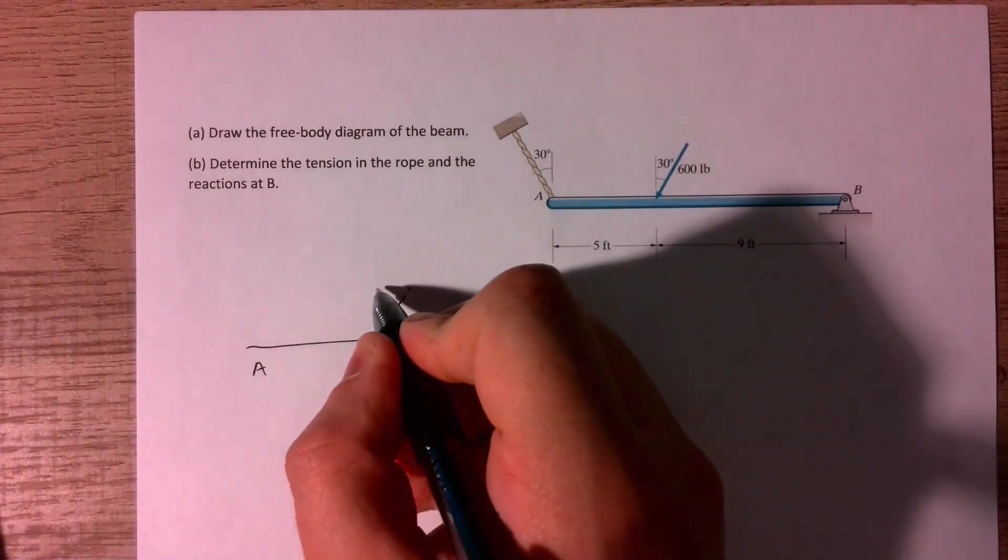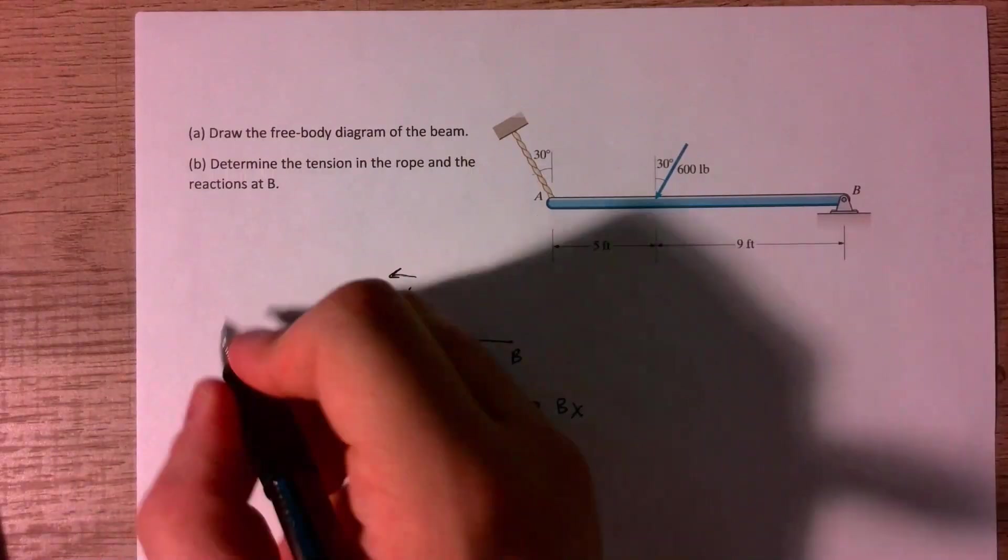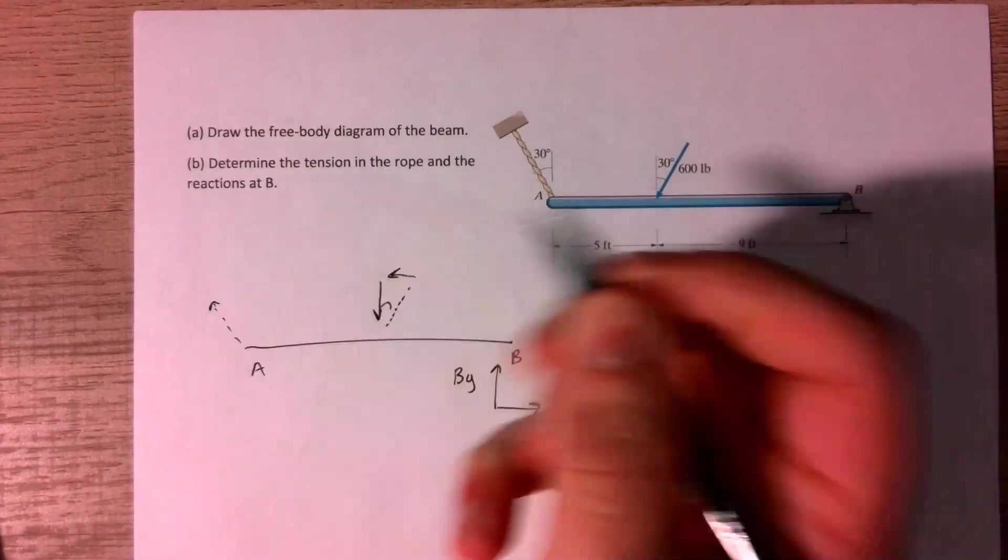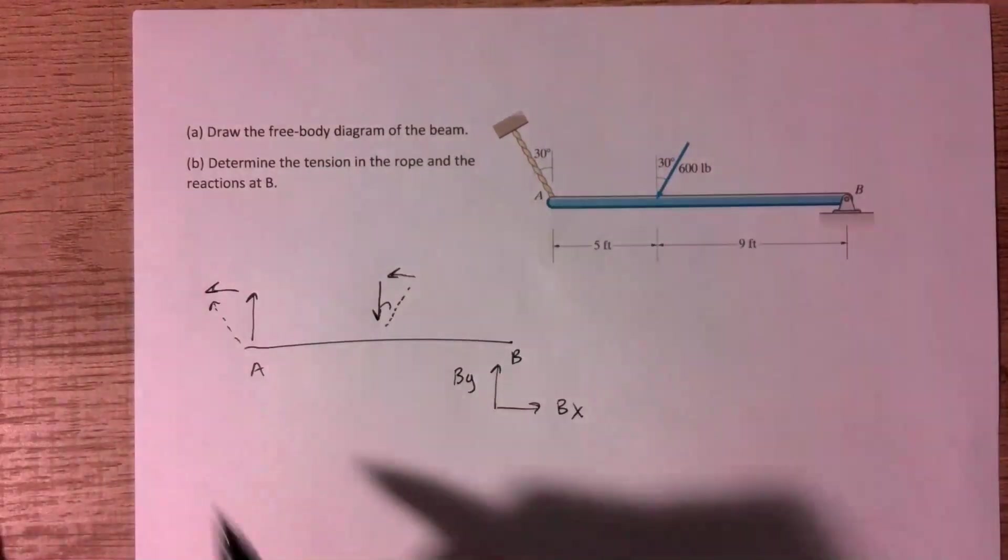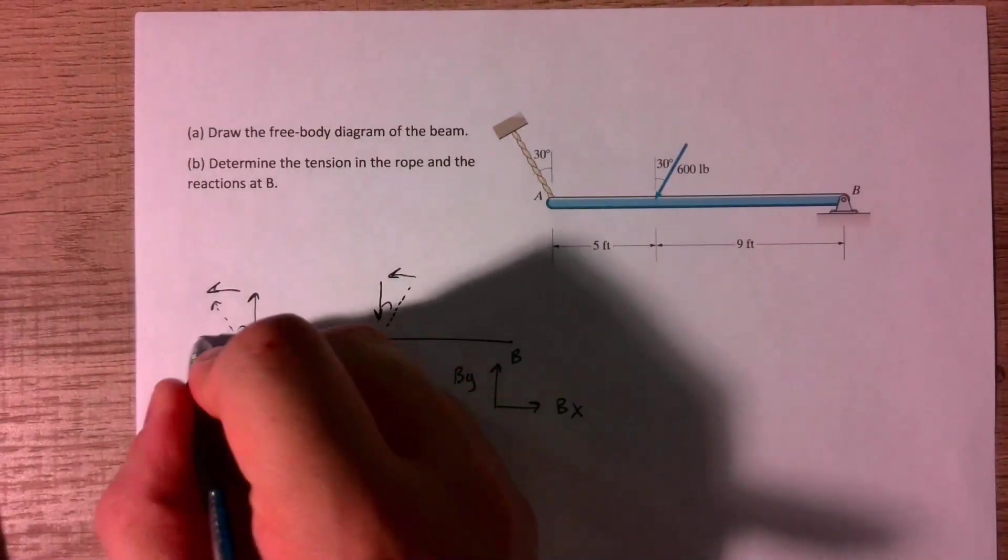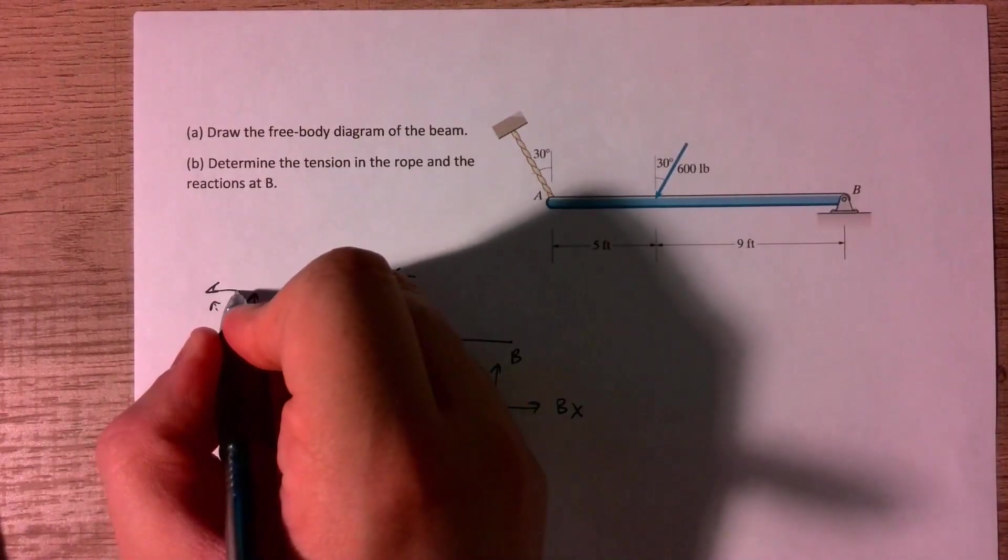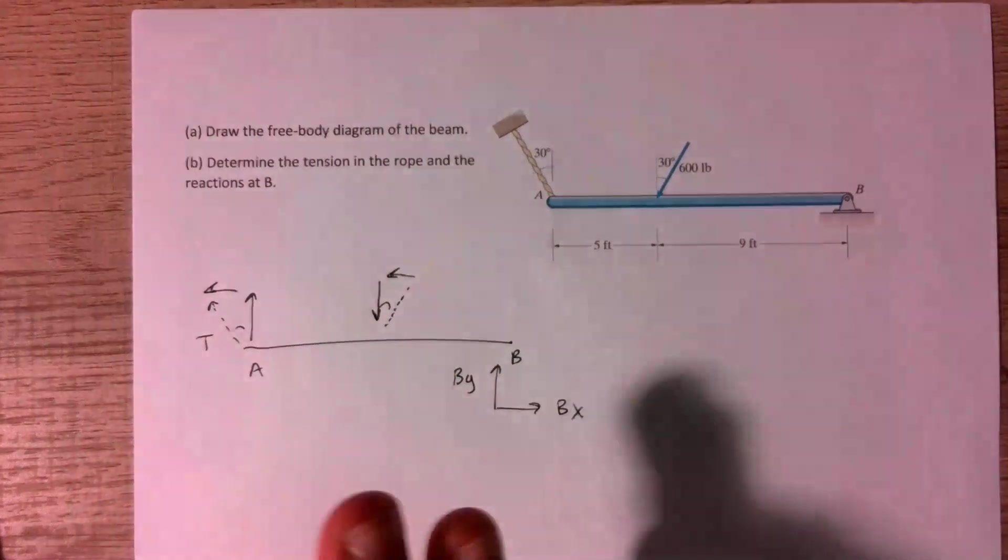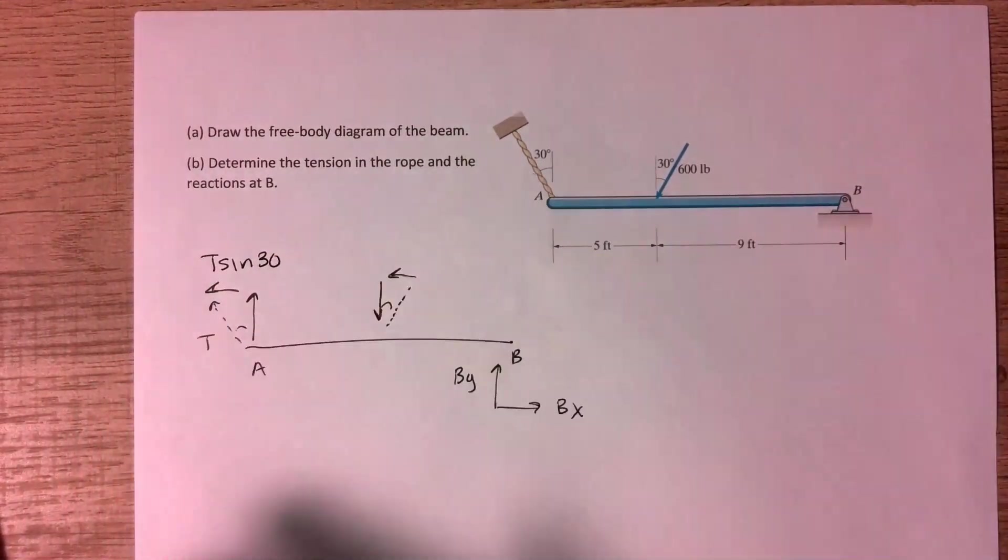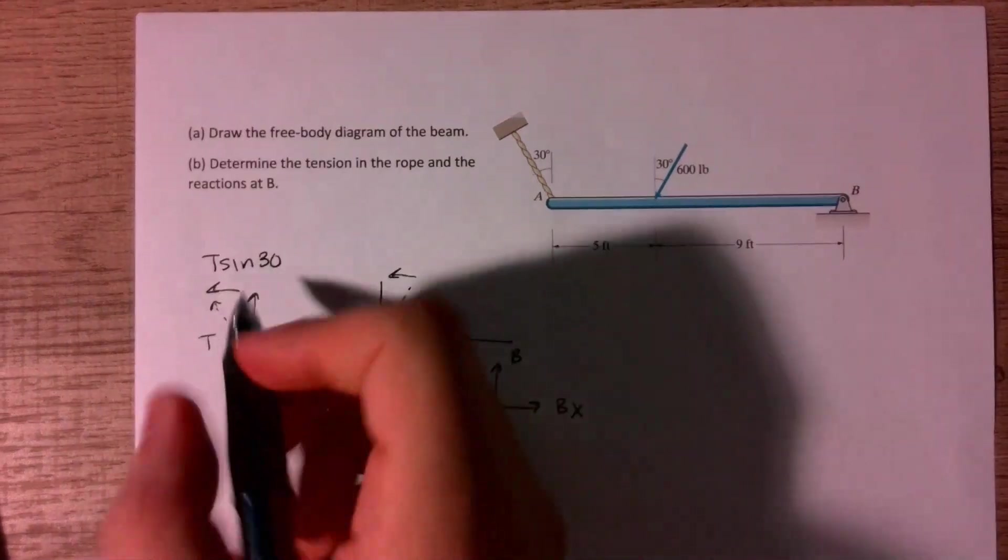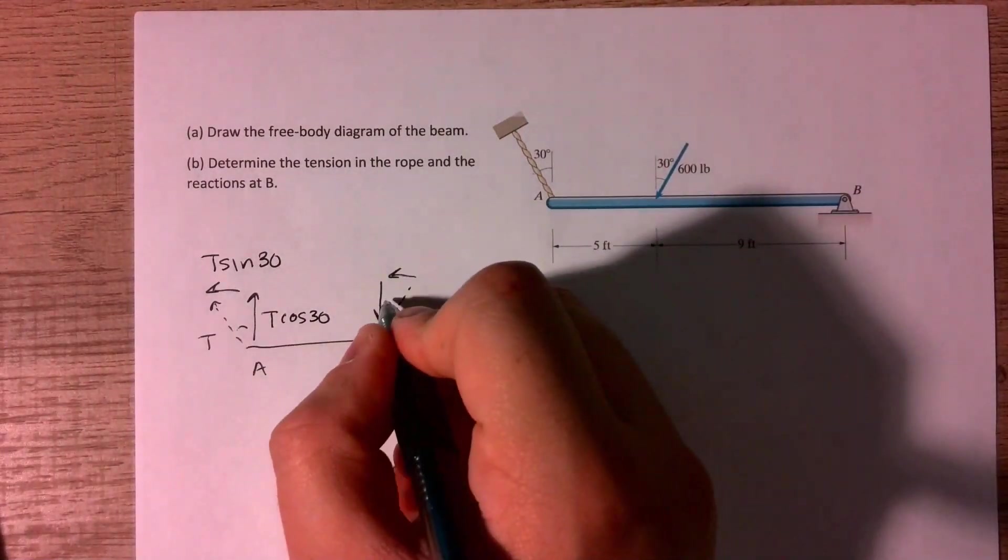So we have our force components going this way. And then for the tension, we can do kind of the same thing. Our tension is pointing outwards, so we have a component going up, and then one to the left. So we'll start. I'll call this T, and then we have an angle here. And so the sine of this angle is going to be this force that's going in that horizontal direction. So I'll call this T sine 30, because they're degrees of the angle. And by default, that makes the other one T cosine 30.